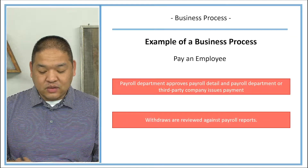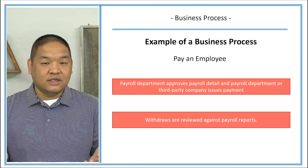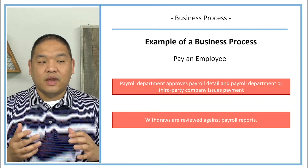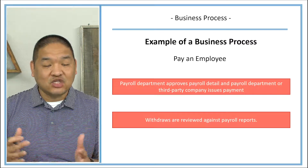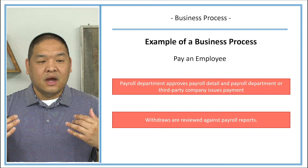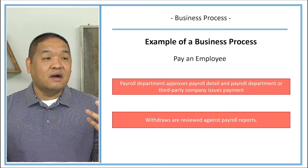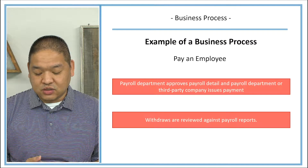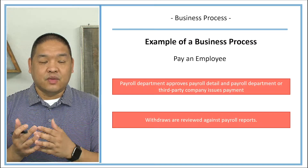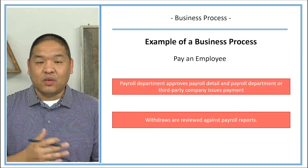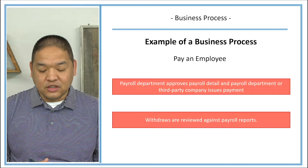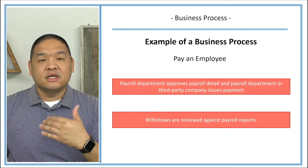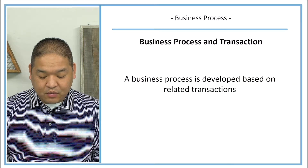Finally, we might look at the withdrawals at the end of the period and compare them to the ending reports to make sure what we expected to come out of our accounts actually did. For example, an employee may not have cashed their check yet, so we need to know that. We want to reconcile what happened with what our reports show. That is an example of a business process — specifically, paying an employee.